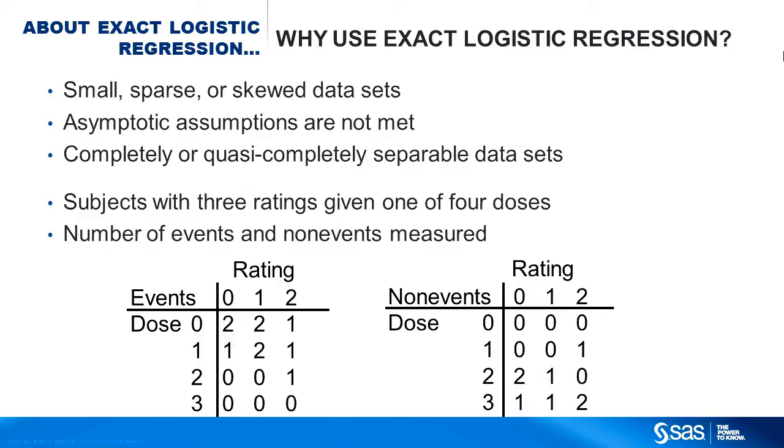There are at most two observations per cell, but for asymptotics to kick in, you want most of the cells to have at least five observations. Just looking at the data, it seems a higher dose is related to having fewer events, but rating does not look significant.